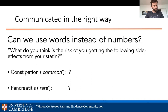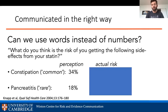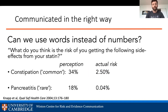Another issue in risk communication is when and how much you can use words instead of numbers. When we say constipation is a 'common' side effect, or pancreatitis is 'rare,' people tend to think 'common' means about 1 in 3 and 'rare' means about 1 in 5 or 6. But the actual risk of these conditions as statin side effects is off by another two to four orders of magnitude. People get dramatically wrong numbers from words like 'common' and 'rare.'